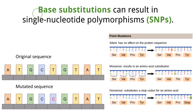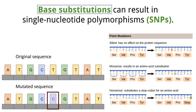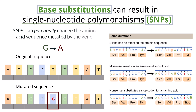One common mutation is a base substitution, which means that one single nucleotide is changed and replaced with a different nucleotide. For example, this could mean a thymine was substituted with a cytosine, or a guanine with an adenine. This leads to what's called a single nucleotide polymorphism, or SNP. Depending on where it happens, it might change the amino acid in the protein, or it might not.